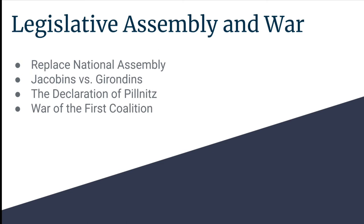During this time, the Declaration of Pillnitz was issued by Prussia and Austria, due to the queen's ties to Austria — her having been from there. The French nobles who had fled France at the beginning of 1789 had influenced Prussia and Austria to issue this declaration. Basically, they wanted the Austrian Emperor Leopold to take over France and stop the revolution from the outside, since Louis XVI had failed to do so from the inside. This led to the War of the First Coalition, where the French Revolutionary forces were soundly defeated by the Austrian military. They also issued the Brunswick Manifesto, which basically just said that if you hurt the royal family, they would destroy Paris.